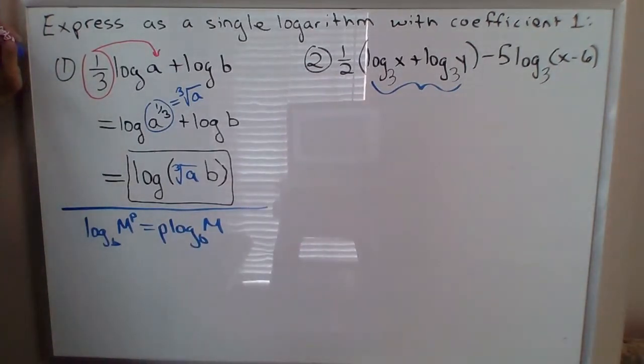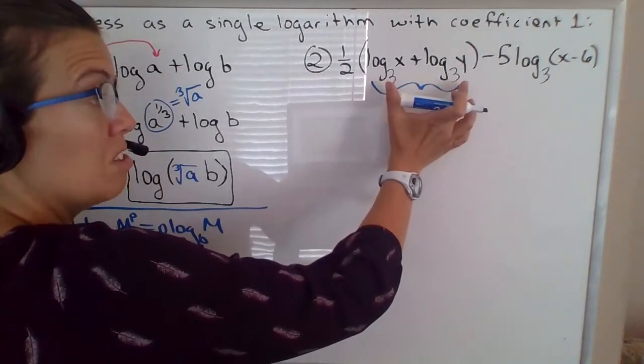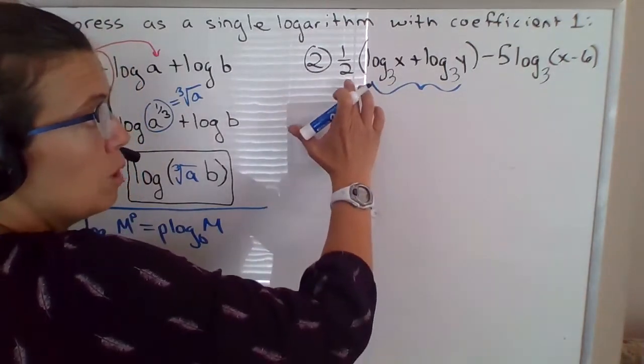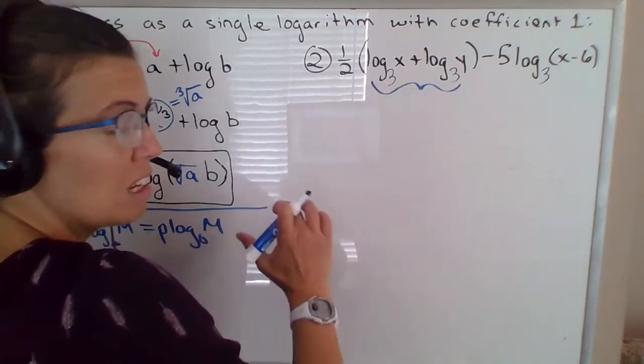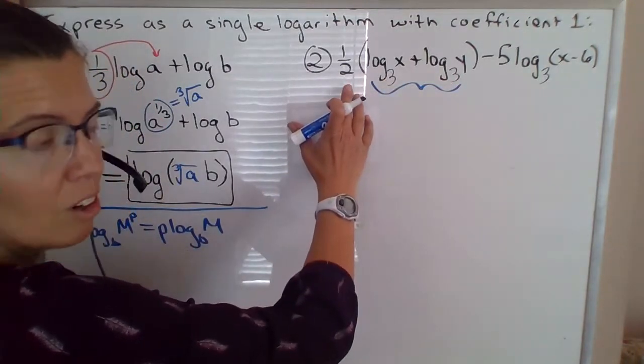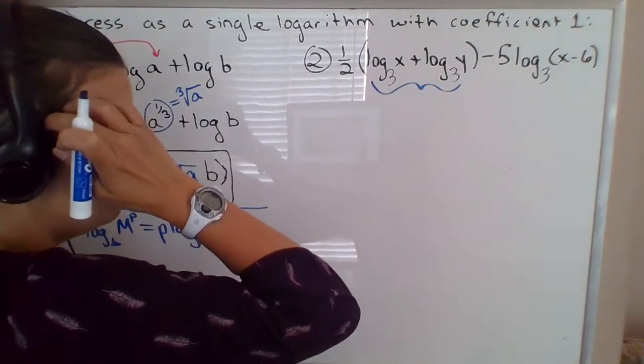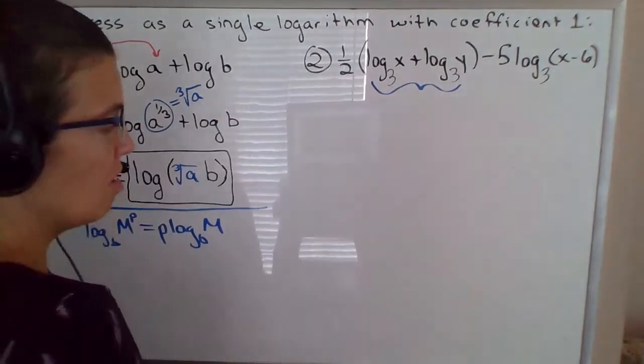So because the one half is now applied to a sum, we can't fold it up right away. You actually, you have two options if you want to look at this way. You could distribute, you could multiply out one half times this first part, one half times the second part, or kind of follow your order of operations. You should combine the logs inside the parentheses first.